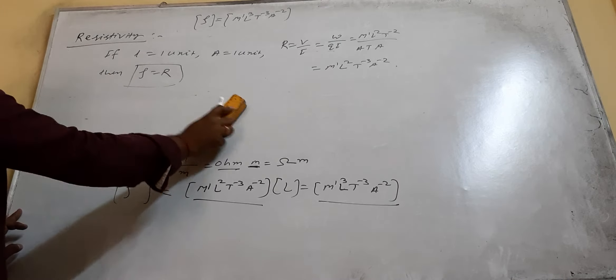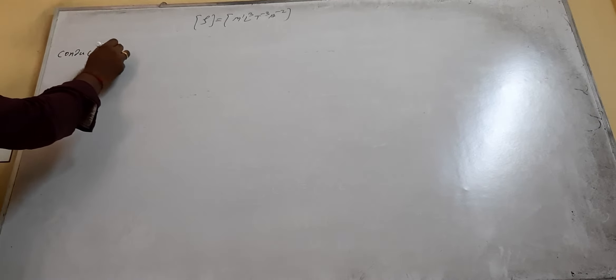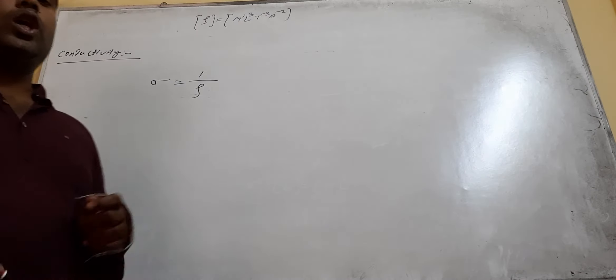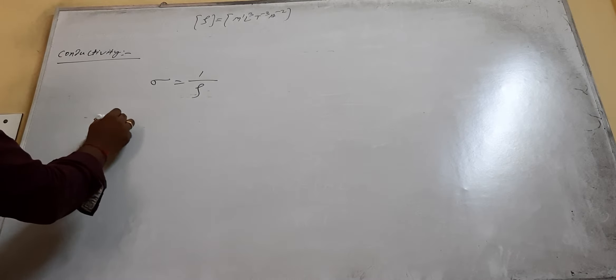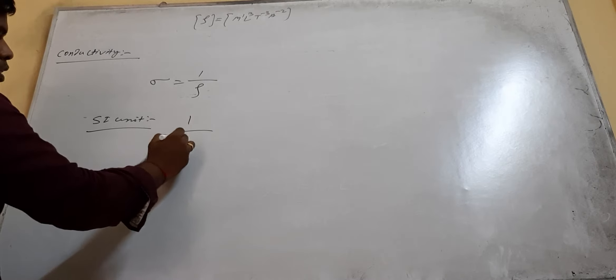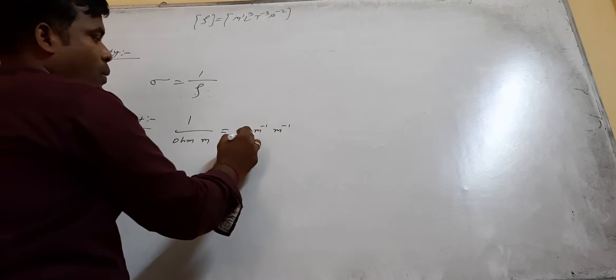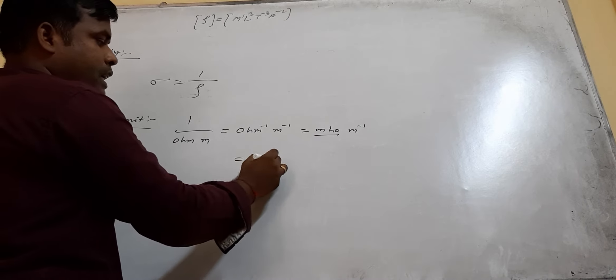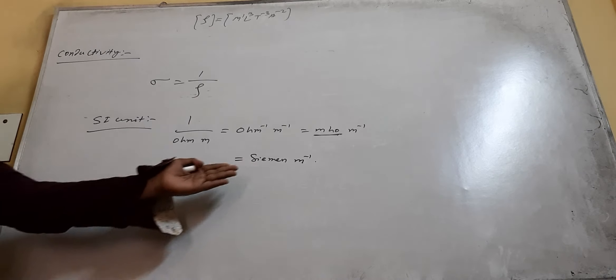Now come to conductivity. Conductivity is the reciprocal of resistivity. Its unit is 1 per Ohm·meter, which can be written as Ohm-inverse meter-inverse, or mho per meter, or Siemen per meter (S/m).